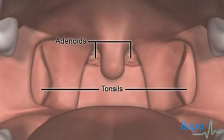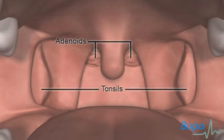The adenoids are two small lumps of tissue that lie at the back of your nose. The tonsils are two oval lumps of tissue. They sit on either side of the back of your mouth, behind your tongue.